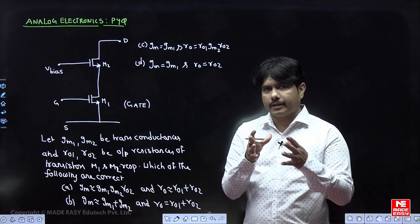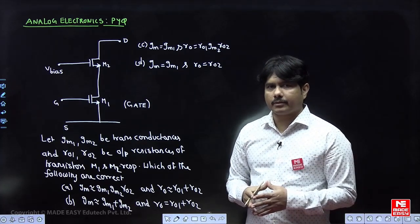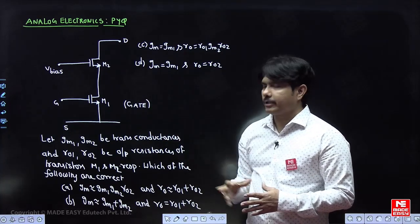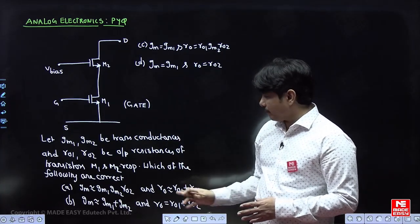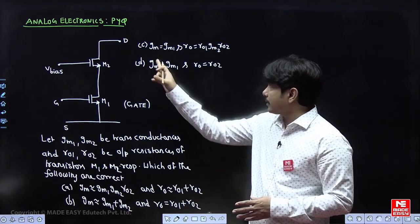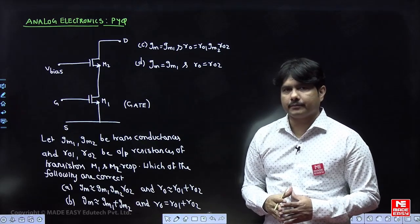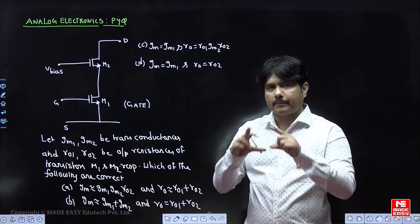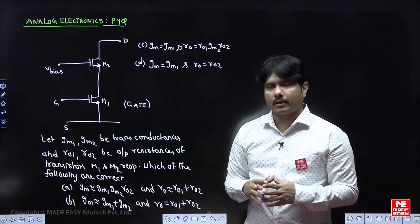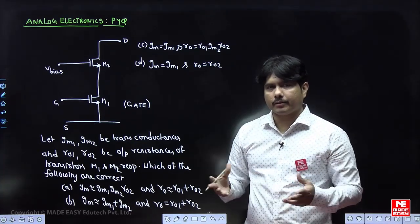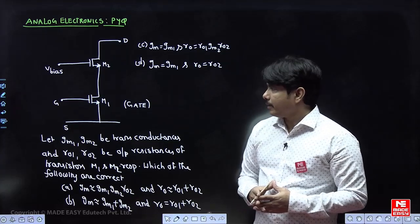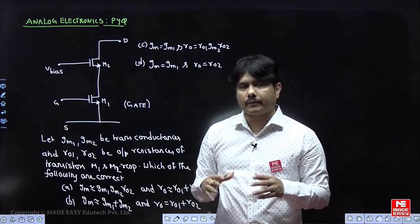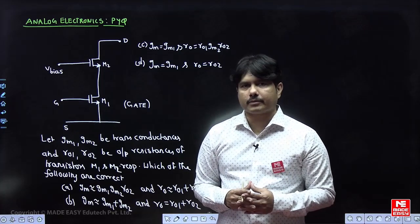The question asks: what is the overall GM value of this system, and what is the overall output resistance seen from the output? The complete system GM — how much? And the complete circuit R0 — output resistance — how much? First, students should recognize this circuit in analog electronics and understand what it is called.